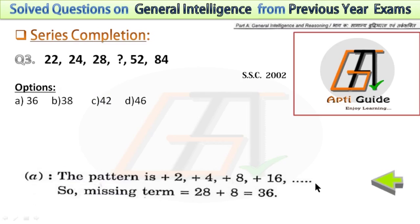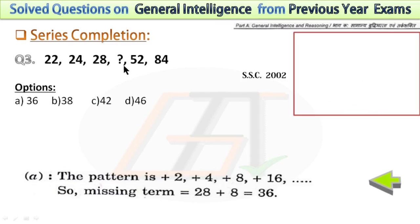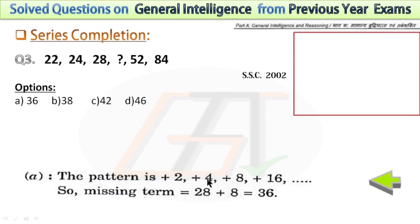In the third question, the series is 22, 24, 28, then there is a missing term, 52 and 84. This is an addition series. I have shown the pattern in the explanation box. If we find the difference between consecutive numbers, we get 2, then 4, then 16. Following this pattern, the differences are 2, 4, 8, 16, 32. So if you add 8 with 28, you will get 36, which is the correct answer.